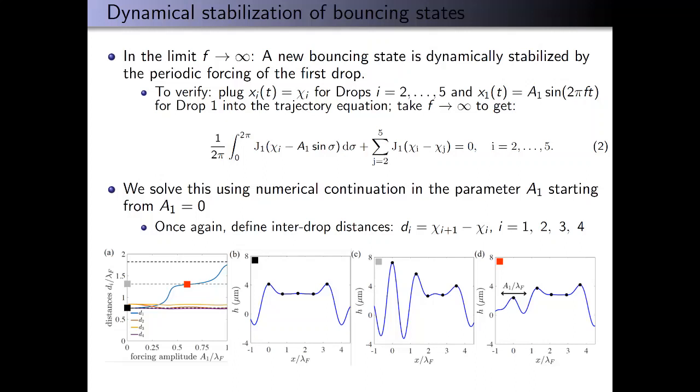Essentially what's happening is that this unstable equilibrium state is being dynamically stabilized by the rapid forcing on drop one. That is shown by the red square, which corresponds to panel D. That's the wave profile and drop positions for the case in which we have the forcing on drop one dynamically stabilizing this formerly unstable equilibrium state. That's a very interesting result.